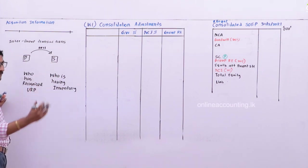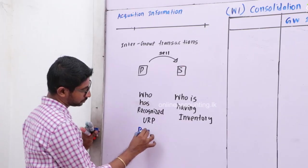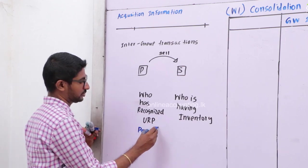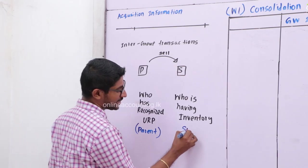Goods to subsidiary - then who has recognized the unrealized profit? Father has sold necklace to mother, who is happy? Father. So in this kind of situation, who has recognized the unrealized profit? It is the parent. Parent. Who is holding the inventory? P sold goods to S. Who is holding the inventory? Subsidiary.